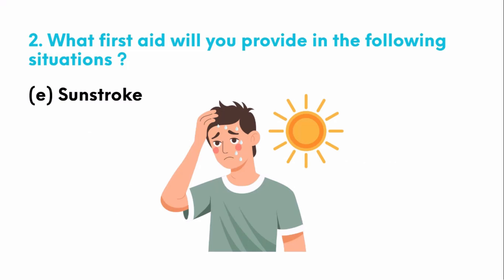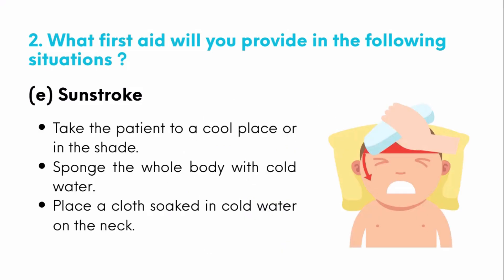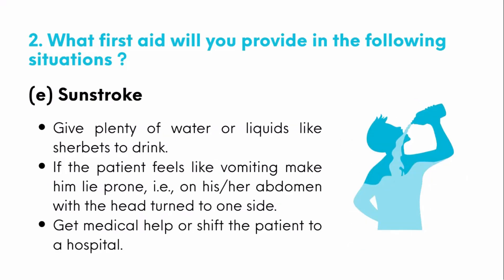The next one is sunstroke. First aid for sunstroke: take the patient to a cool place or in the shade. Sponge the whole body with cold water, then place a cloth soaked in cold water on the neck. Give plenty of water or liquid like sherbet to drink. If the patient feels like vomiting, make them lie prone — that is, on the abdomen — with the head turned to one side.